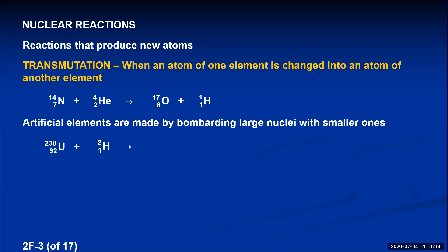This process is actually how all elements past uranium are created. On Earth we find elements up to uranium (92), with small amounts of neptunium (93) and plutonium (94). We can create elements with more than 92 protons by bombarding large nuclei with smaller ones — for example, bombarding uranium-238 with hydrogen-2 to form neptunium-238, releasing a pair of neutrons.